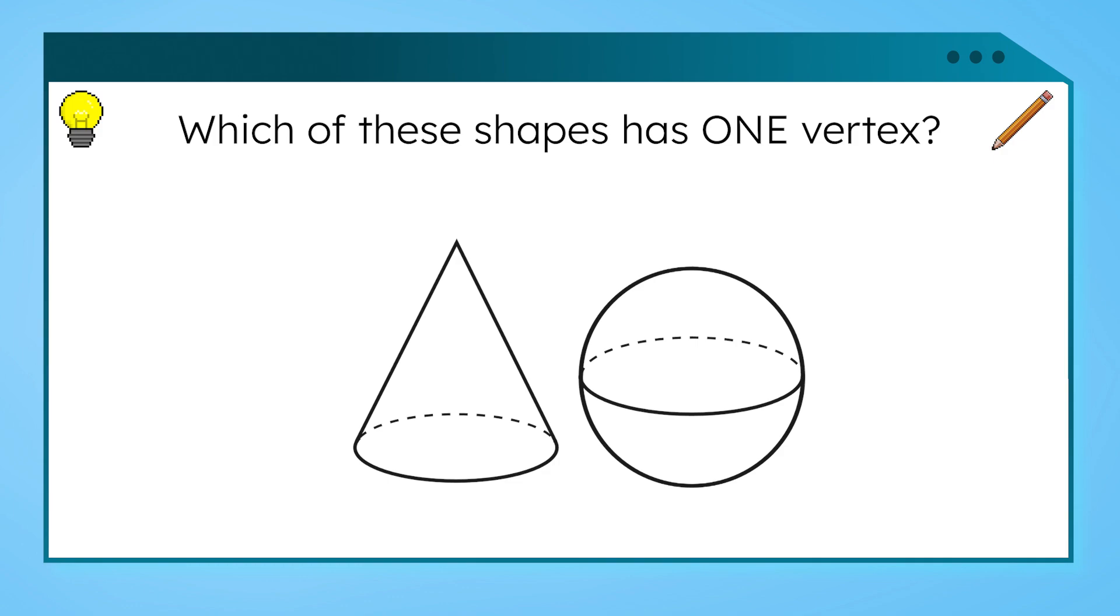Remember, a vertex is like a corner on the shape. Do you see a shape here that only has one?